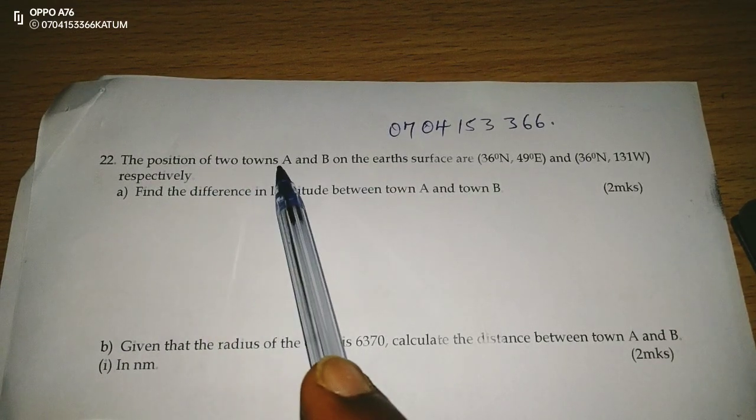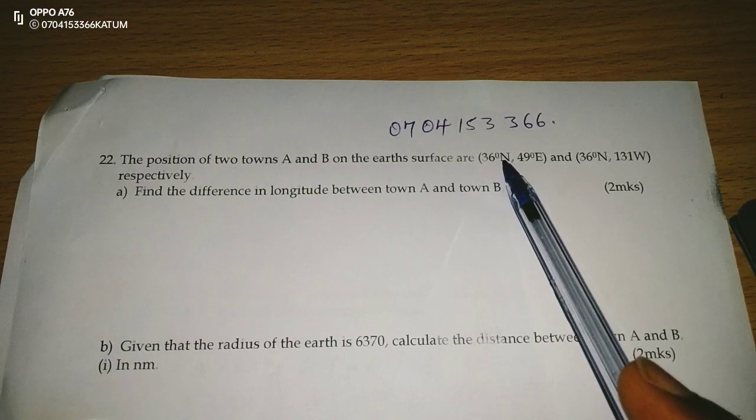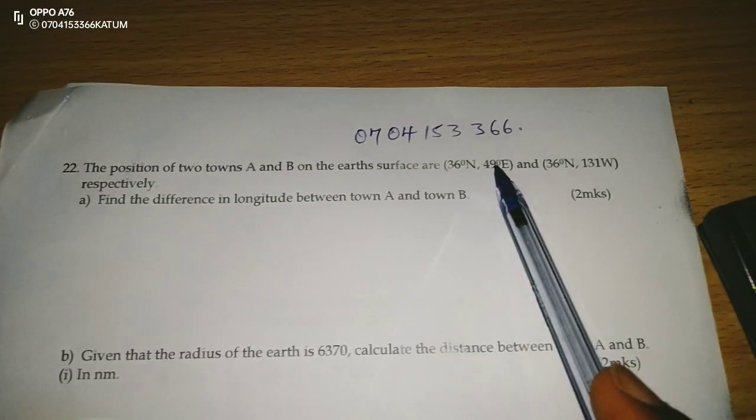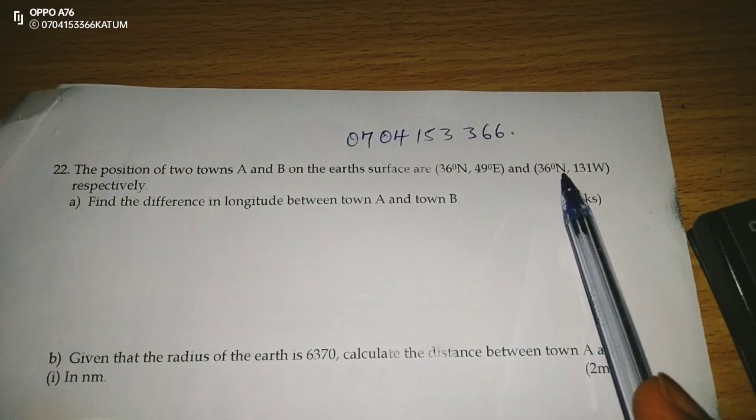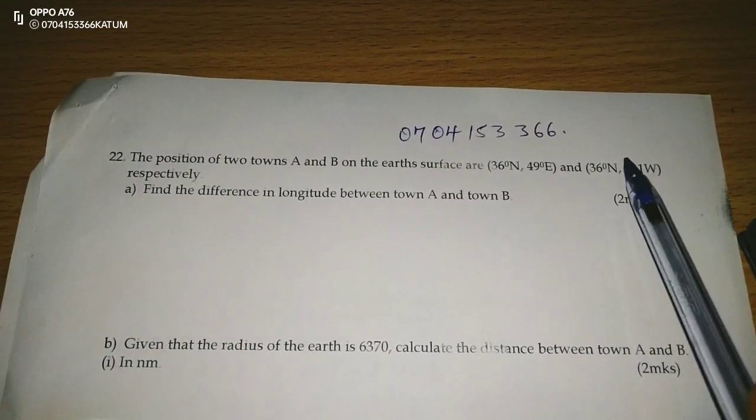The position of two towns A and B on the earth's surface are 36 degrees north, 49 degrees east, and 36 degrees north, 131 degrees west, respectively.